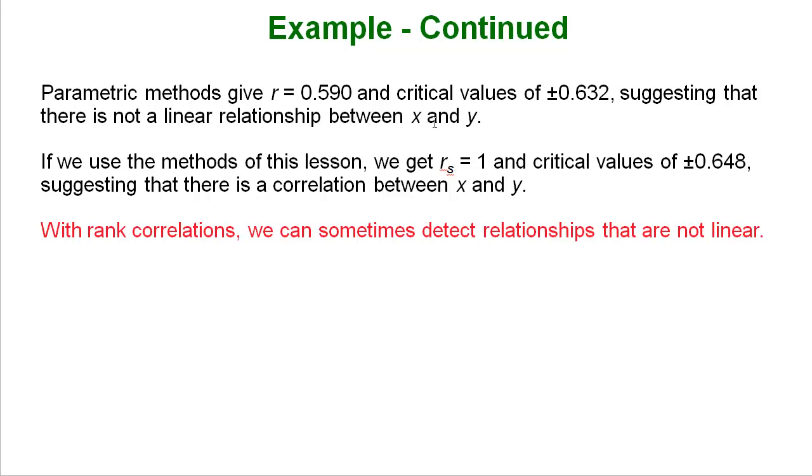And by doing a nonparametric test, not necessarily a rank one but there are many other ones out there, if you do a nonparametric test on that data you can actually get an r of 1. You can get a fairly perfect correlation and then say with a slightly different critical value that there is in fact a correlation between x and y. So with rank correlations as stated before one of the big things is we can sometimes, with all nonparametric but with rank correlations as being one of the type of nonparametrics out there, we can sometimes detect relationships that are not linear. Have fun.